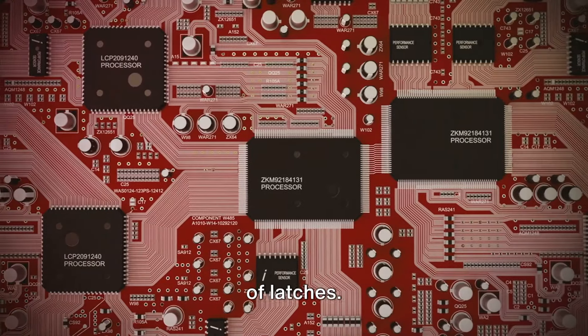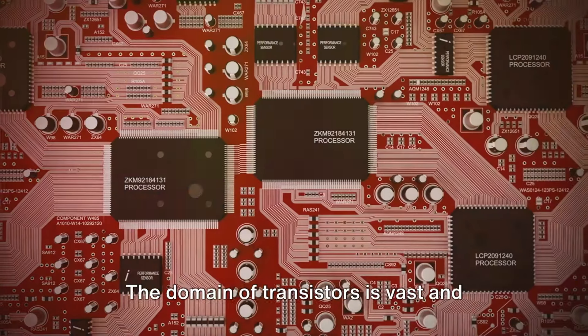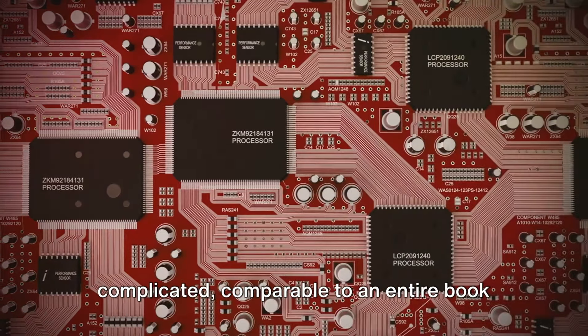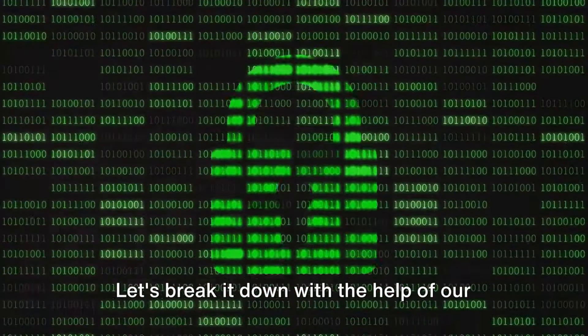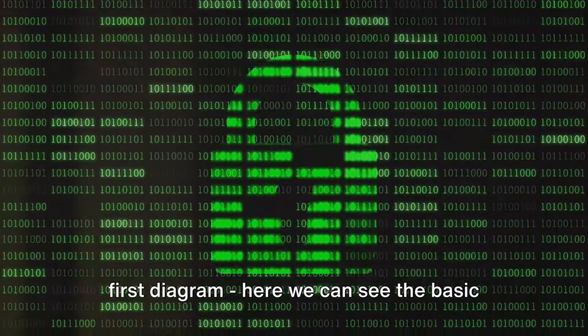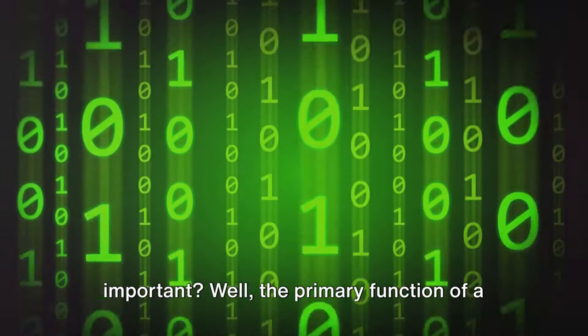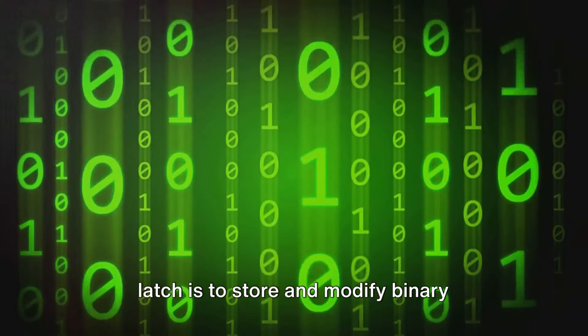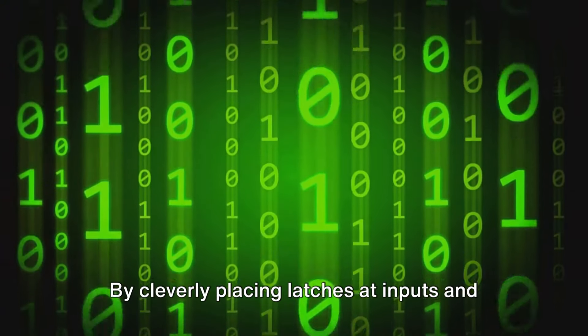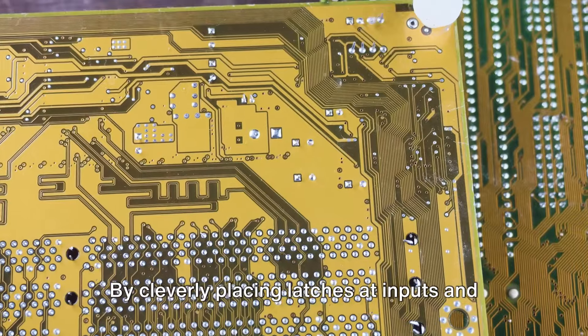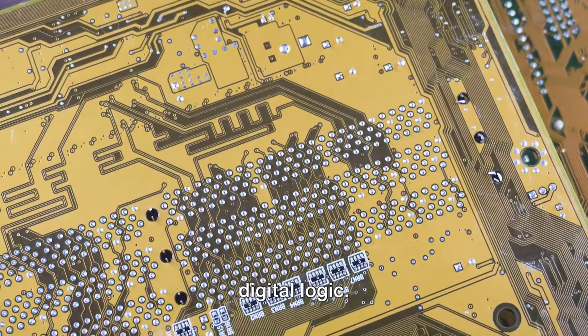MOSFETs are critical in the construction of latches. These transistors consist of several metals and semiconductors. The domain of transistors is vast and complicated, comparable to an entire book chapter, which we will delve into later. Let's break it down with the help of our first diagram. Here we can see the basic structure of a MOSFET. Now, why are these components so important? Well, the primary function of a latch is to store and modify binary values, represented as 1s and 0s.